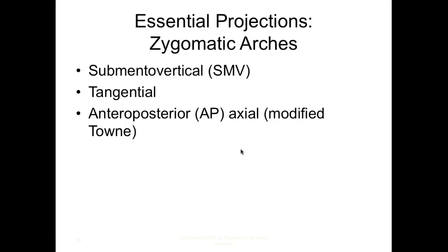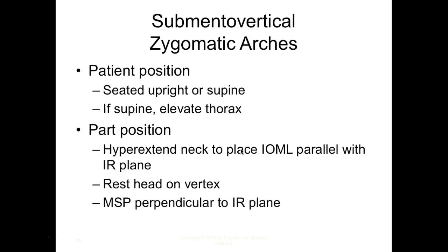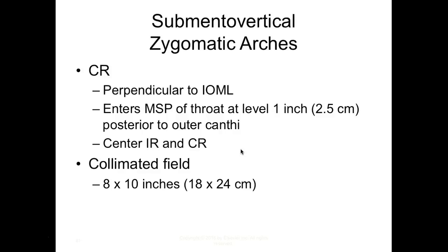For zygomatic arches, we shoot an SMV, a tangential, and an anteroposterior axial (modified Towns). For the SMV, have the patient seated or laying on their back with the thorax elevated. Hyperextend the neck so the IOML is parallel with the IR plane, resting the vertex on the IR. The MSP is perpendicular to the IR, and the CR is perpendicular to the IOML, entering the MSP at the throat level one inch posterior to the outer canthus. For zygomatic arches, make sure you don't clip off the posterior portion.